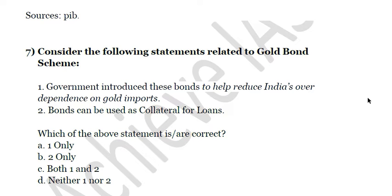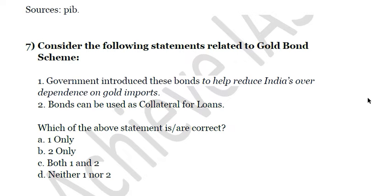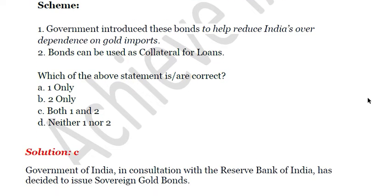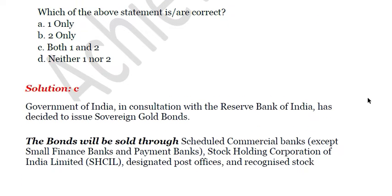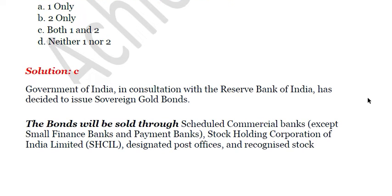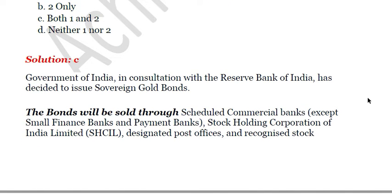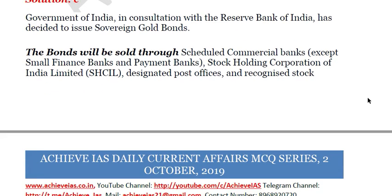The next question: consider the following statements related to the Gold Bond Scheme. First, the government introduced these bonds to help reduce India's over-dependence on gold imports. Second, bonds can be used as collateral for loans. Both statements are correct. The Gold Bond Scheme was introduced to help reduce India's over-dependence on gold imports, and can also be used as collateral. It will be sold through scheduled commercial banks (except small finance banks and payment banks), Stock Holding Corporation of India Limited, and designated post offices.